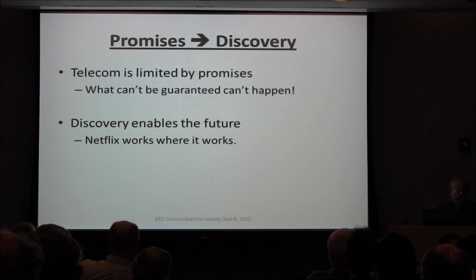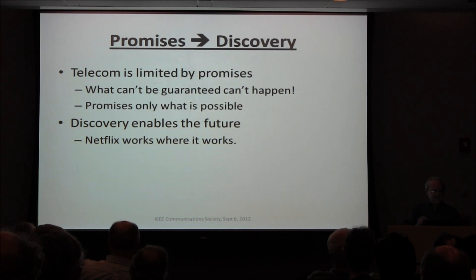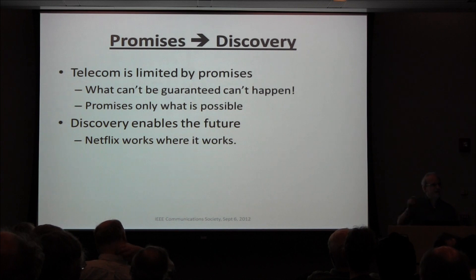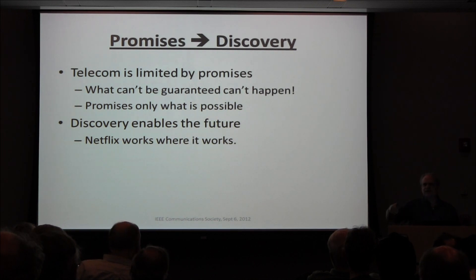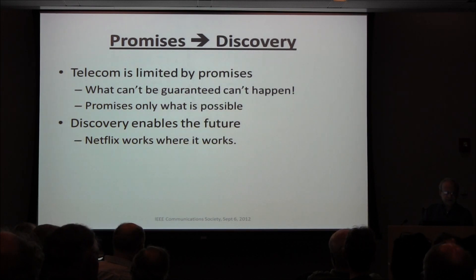Telecom is based on guarantees. But in order to make a guarantee, you've got to prevent things from happening. If you can't guarantee, you can't allow it to happen — otherwise you're making promises you can't keep. You're stuck promising something, as we'll see with ISDN versus alternatives.